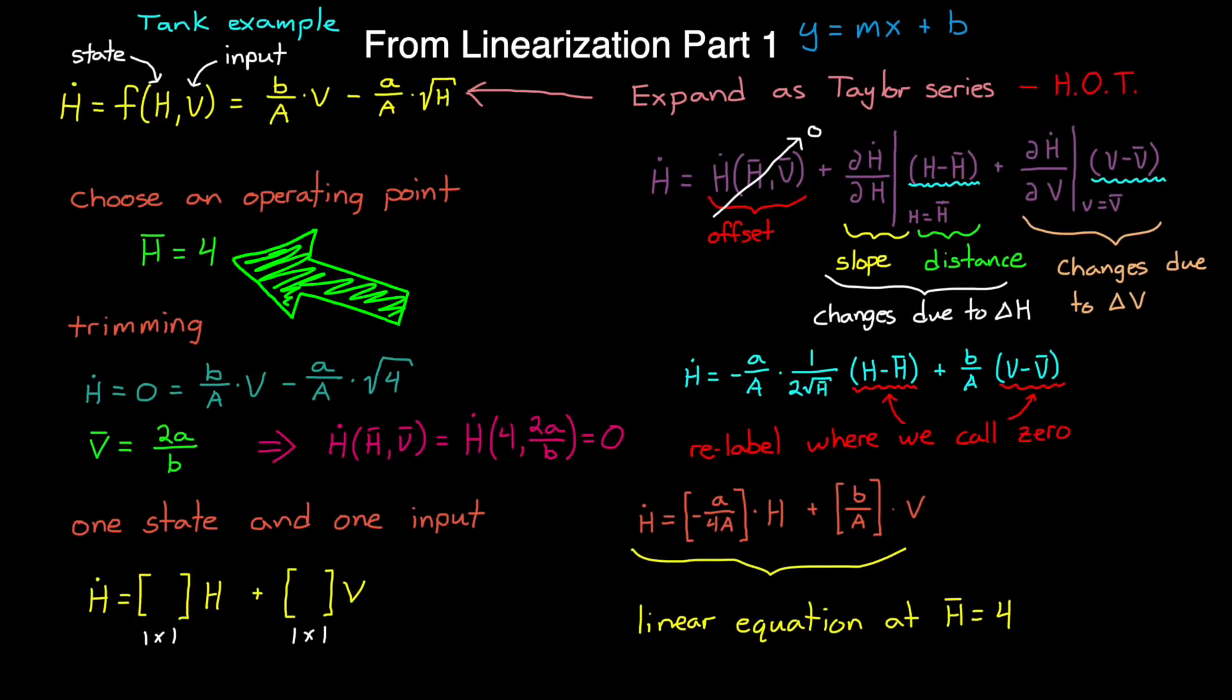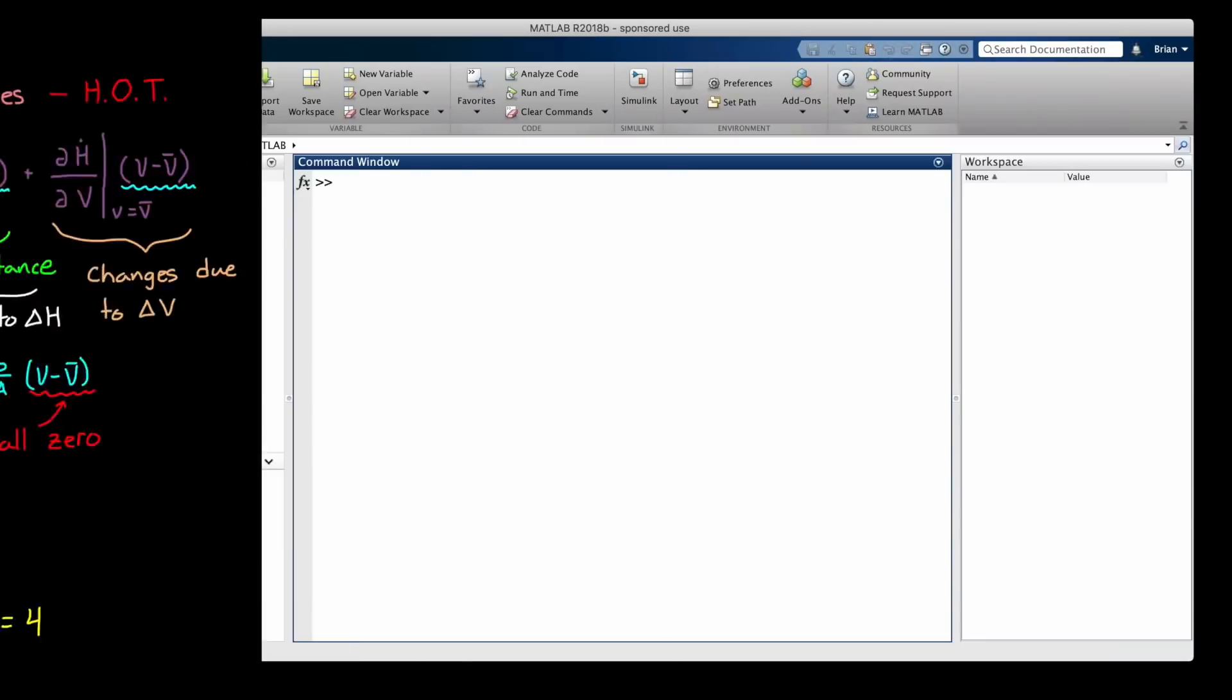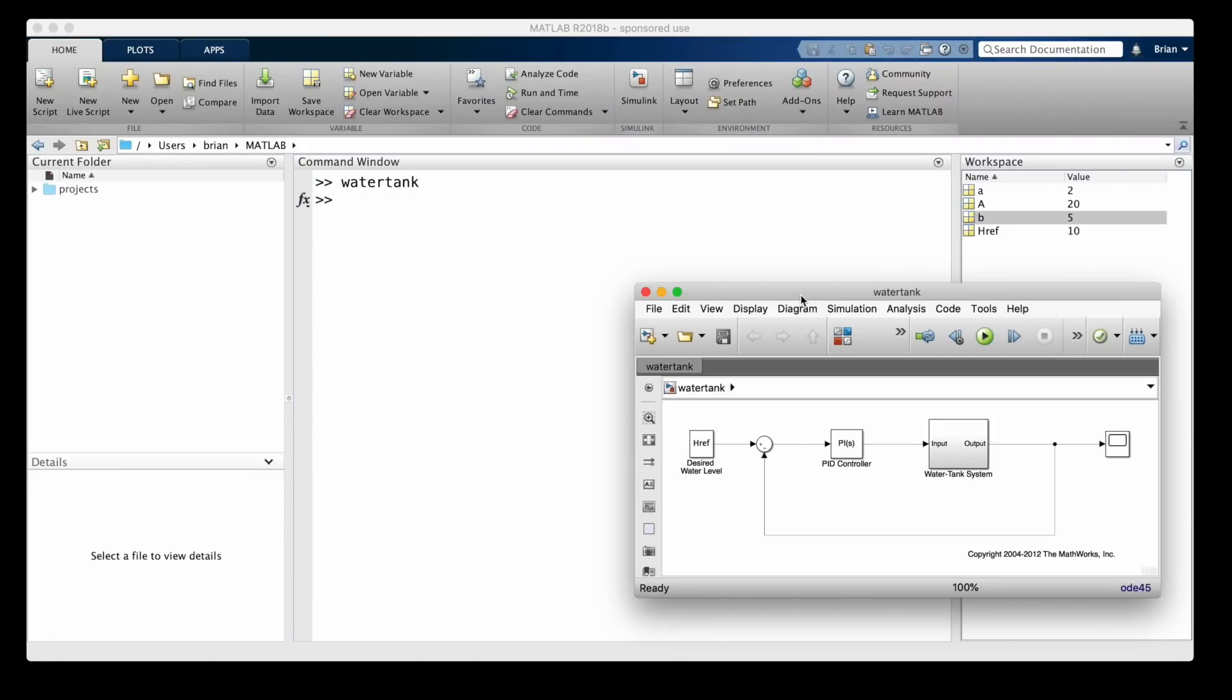The operating point was h-bar equals 4. This resulted in a steady state voltage of 2a over b, and the linear approximation of h-dot as this function of h and v. Now, let's open the water tank example in Simulink, and see if we can generate the same linear model.